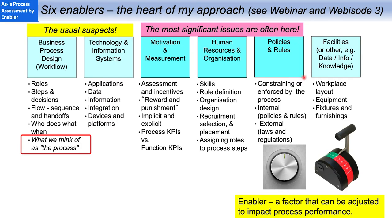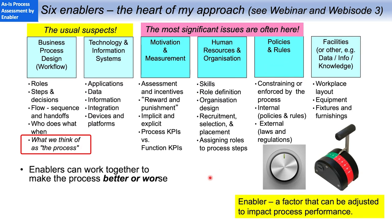They are the human, social, and organizational factors that we see here: motivation and measurement, human resources and organization, policies and rules. And these enablers are not independent — they can work together for better or worse. For instance, something I've seen many times is an overly granular role definition that leads to a fractured workflow: too many participants, too many handoffs.